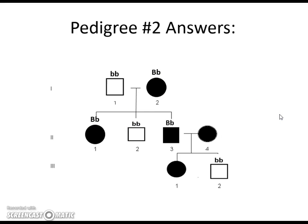Individual II-3 is affected with Best disease and has married a female, individual II-4, who also has Best disease. We can determine that individual II-4 must be heterozygous as well — not fully homozygous dominant — because she had a son without it: individual III-2, the unshaded square, had to receive half his DNA from mom and half from dad. Therefore both parents in generation two are heterozygous. The only individual we cannot determine is individual III-1, the affected female child, who could be homozygous dominant or heterozygous.